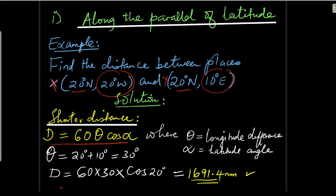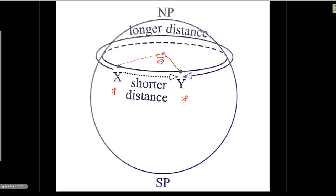If you had been asked to calculate that distance in kilometers, there is a conversion: one nautical mile equals 1.853 kilometers. So if you want to give the distance in kilometers, you simply convert — if one nautical mile equals 1.853 kilometers, what about 1691.4? You just multiply to get the answer.